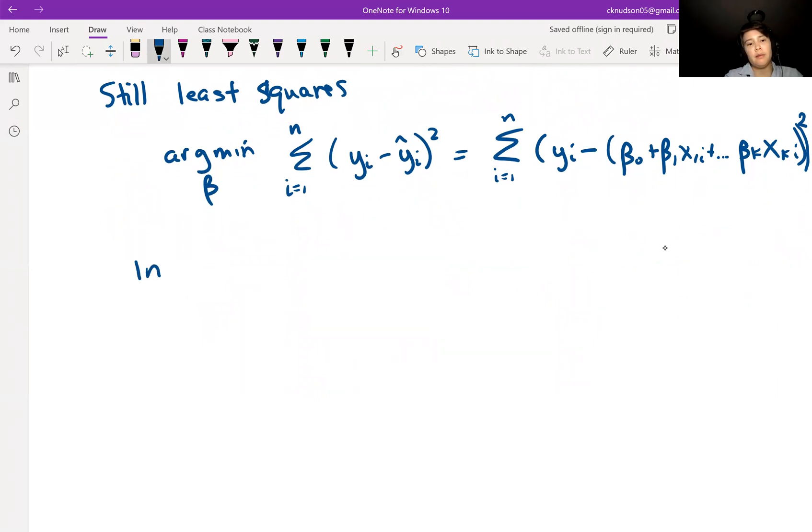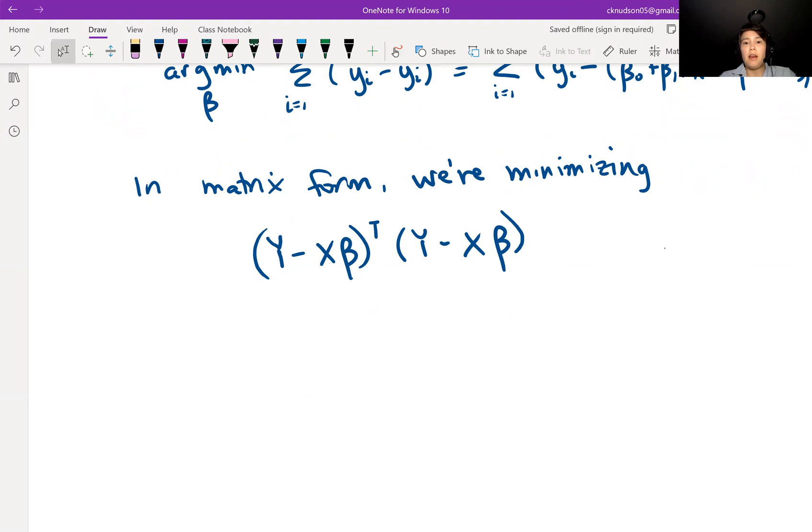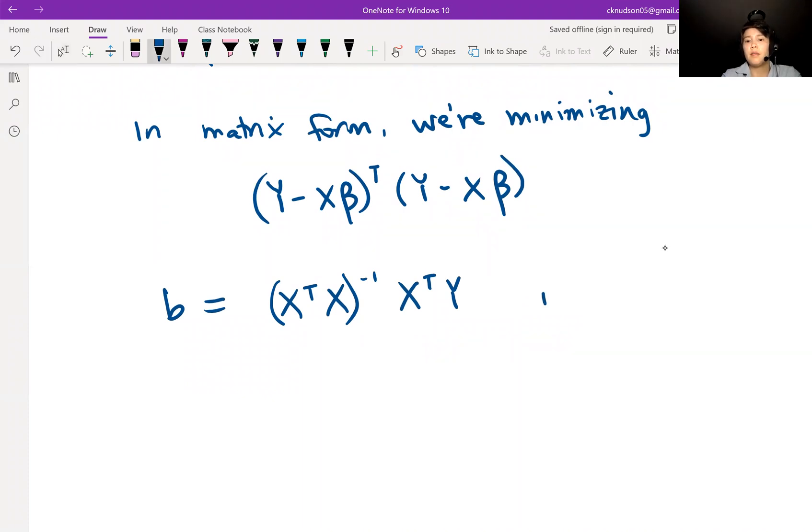In matrix form, we are trying to minimize y minus x beta transpose y minus x beta. So we're looking for the value of beta that would minimize this. And so then we end up with b is equal to x transpose x inverse x transpose y. So this is how we can get our estimator for beta. All right, in our next video, we'll look at some properties of these estimators.